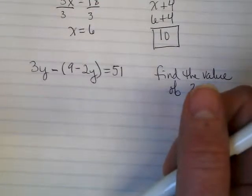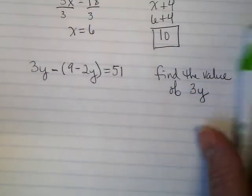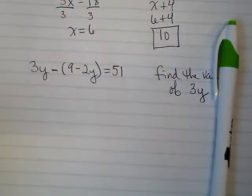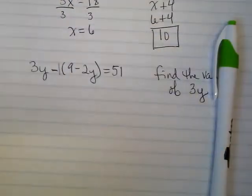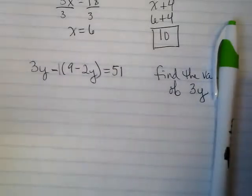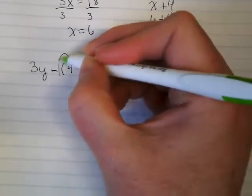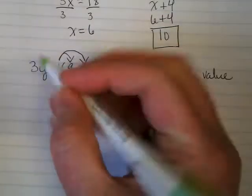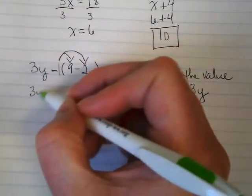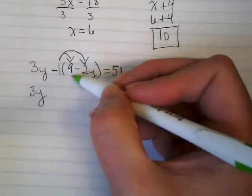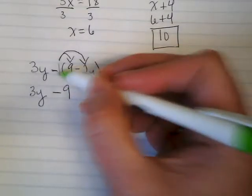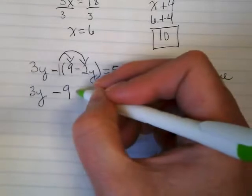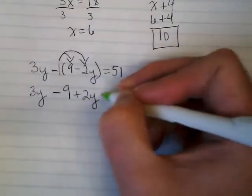Well, we have an invisible here. Our first step is going to be to simplify by starting with multiplying that negative 1, correct? So we're going to distribute it. This 3y comes down, we're not touching it yet. Negative 1 times 9. Negative 1 times negative 2y equals 51.